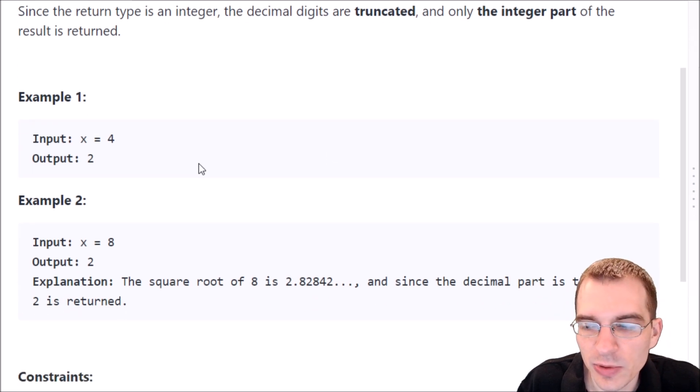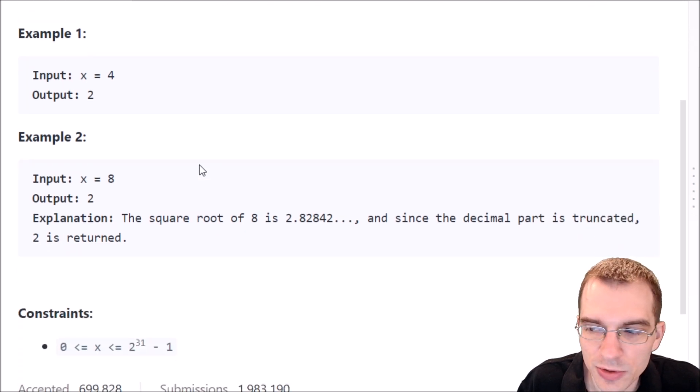I don't know that we even need examples. We kind of know what the square root is. If x is 4, the square root is 2. If x is 8, the output is actually 2 as well because the square root of 8 is somewhere between 2 and 3. It's showing us here the square root of 8 is 2.8 whatever. But if we round that down, then it's going to be 2 as well.